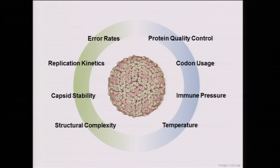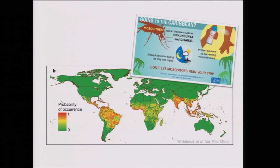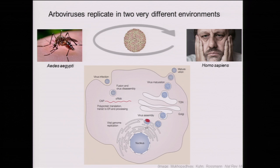Dengue virus is an interesting system, not only because it's an important pathogen—and this map shows the global distribution of dengue. If you've flown recently, you've seen the poster near the security line: if you've been to the Caribbean, or really anywhere, you should wear some bug spray. But it's also interesting in terms of evolution, because it has to cycle between two very different hosts: the Aedes mosquito and Homo sapiens.